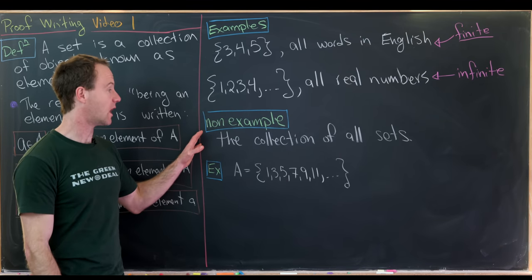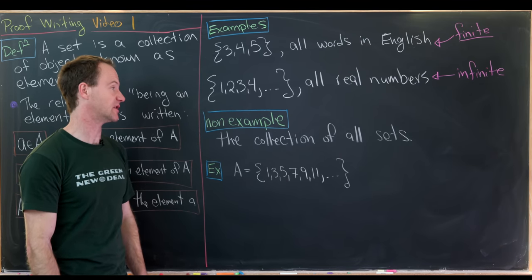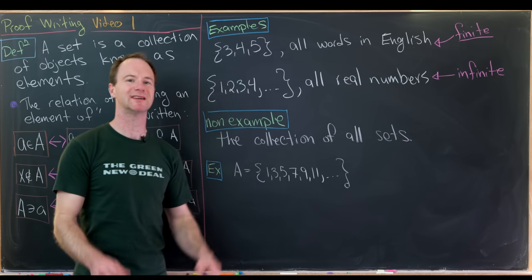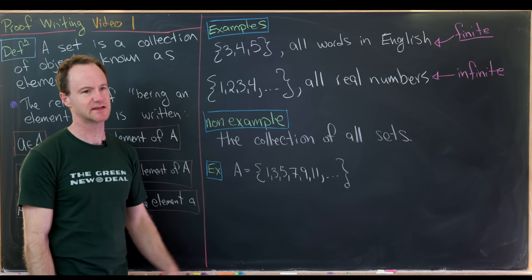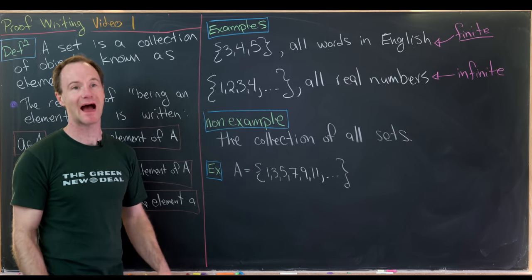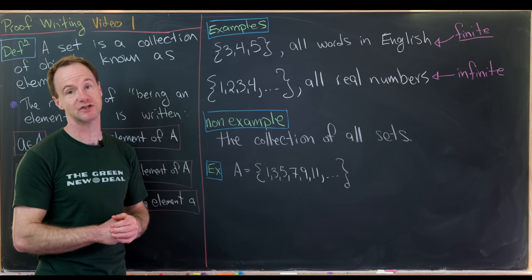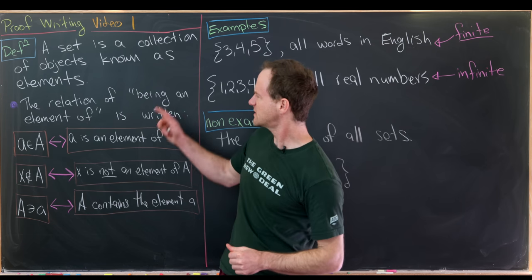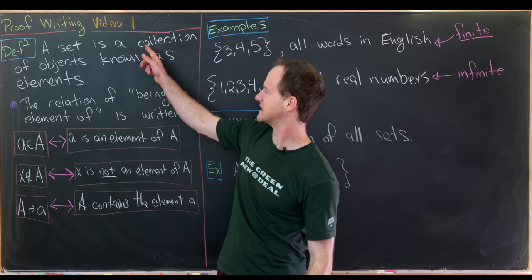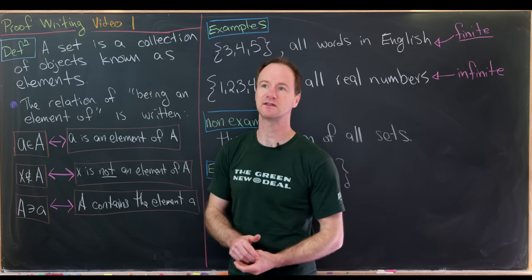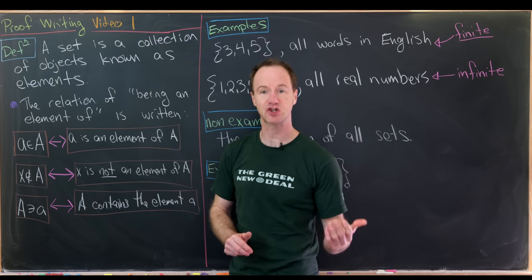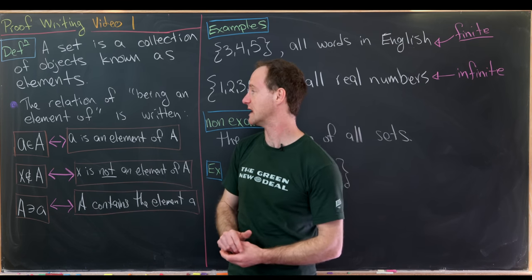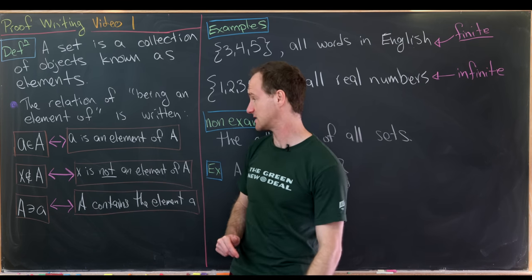A quick non-example would be the collection of all sets. There is no set containing all sets — that's higher-end set theory which we won't get to in this course. Let's go back to our definition and notice that sets are made up of elements. We'd like a shorthand to describe this relation of being an element of a set.